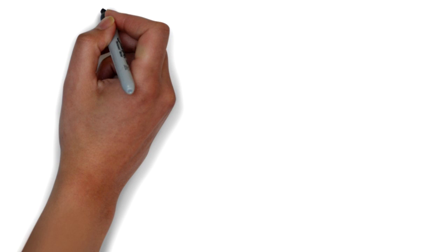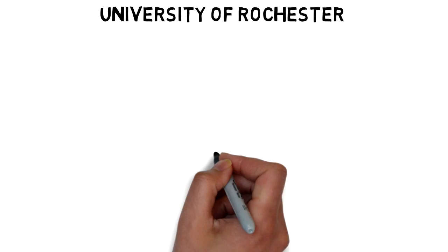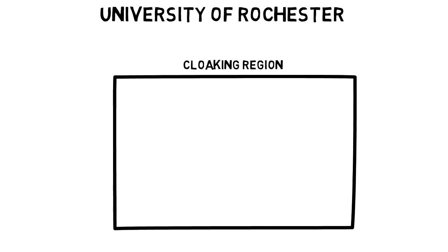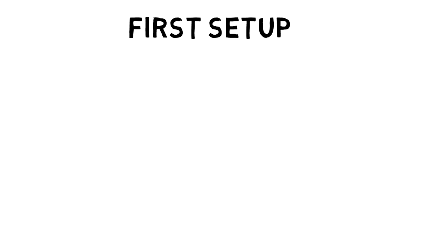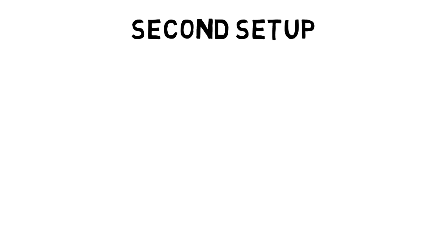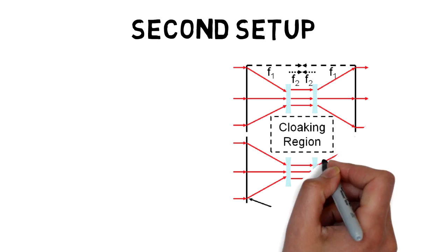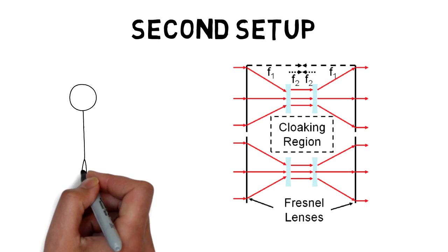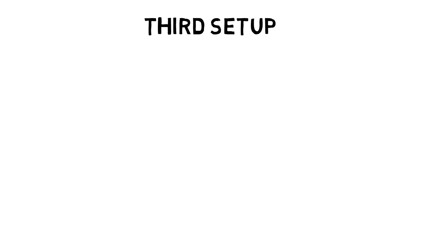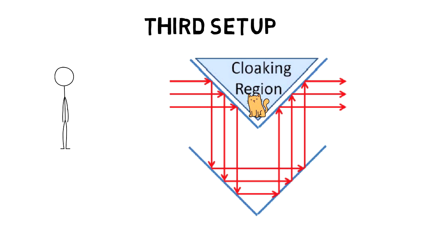A research team at the University of Rochester built better setups to make objects invisible in the cloaking region. This is the first setup where they use water-filled tanks to bend light around the cloaking region where the objects become invisible. In the second setup, they use a series of converging and diverging lenses to create the cloaking region. In another setup, they use mirrors to reflect light around the cloaking region.